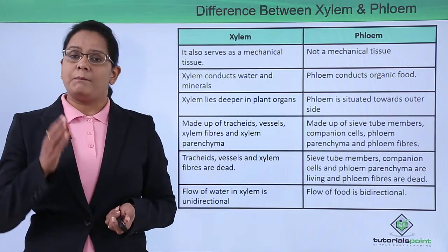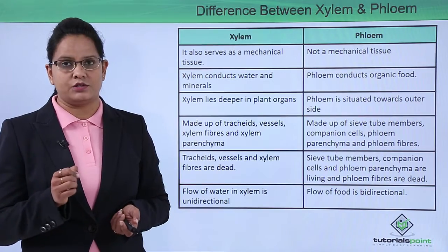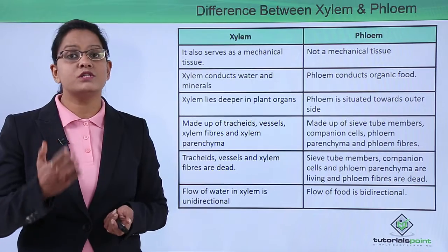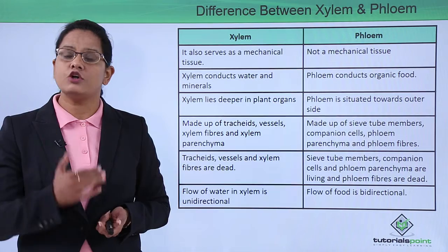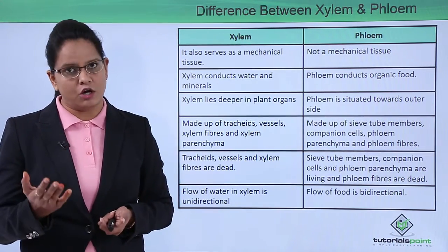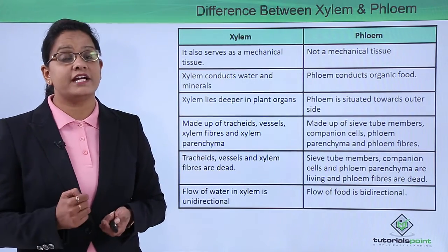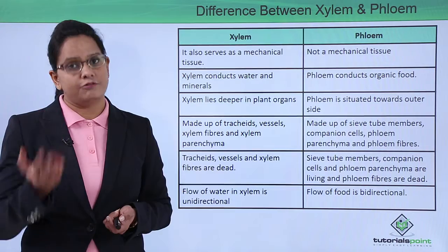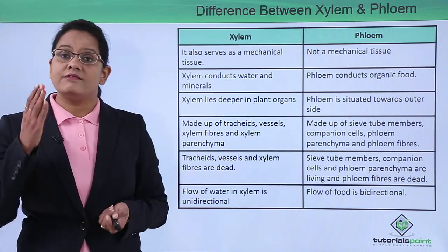Xylem, apart from being a conduction tissue, also serves a function of mechanical tissue. It is generally dead — xylem has mostly dead cells. So apart from being a conducting tissue for water, it also serves as mechanical tissue. But that is not the case with phloem — phloem does not serve as mechanical tissue and does not provide mechanical strength to the plant. Xylem transports water, while phloem transports food, amino acids, hormones, and other biomolecules.